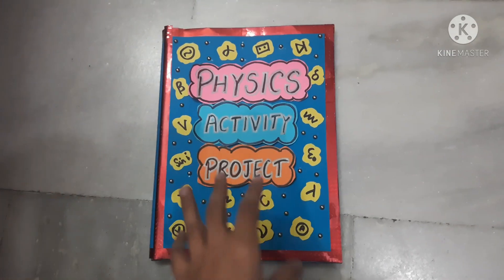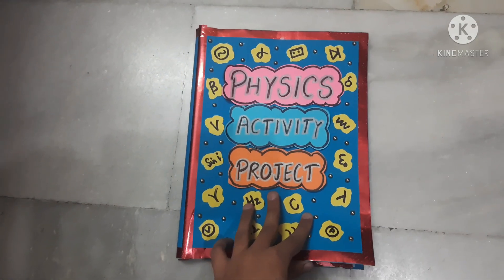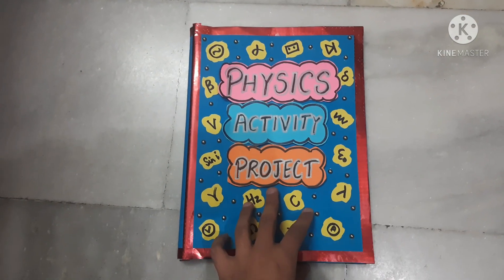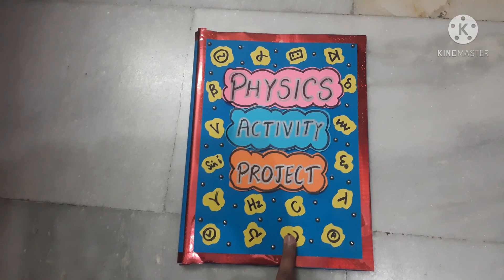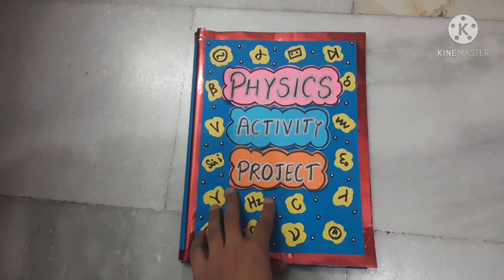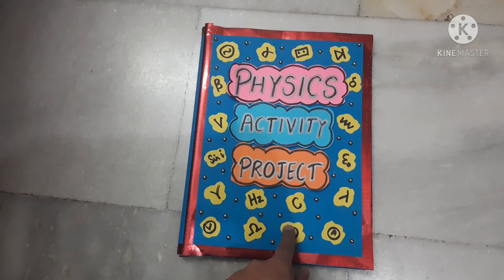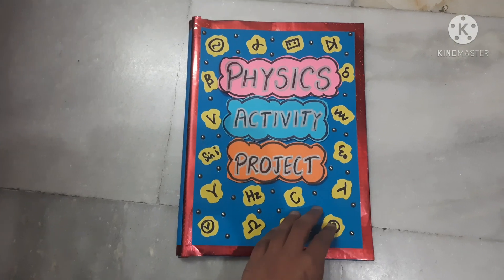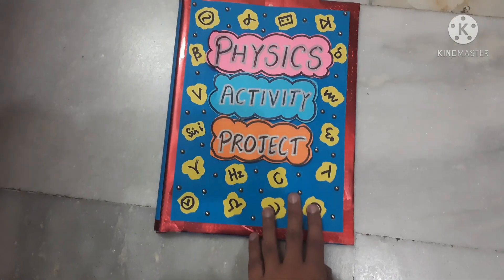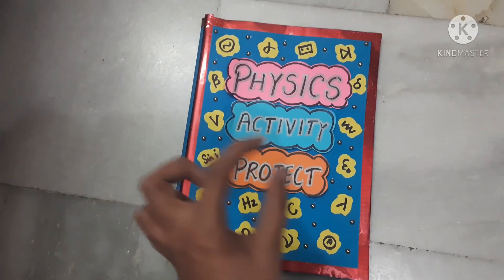So this is the activity project. In this project I have written eight activities which were there in my lab manual. In the lab manual I have written experiments; in this file I have written activities. This is the cover page — I have made small clouds on which I have made the symbols and units that are used in physics.